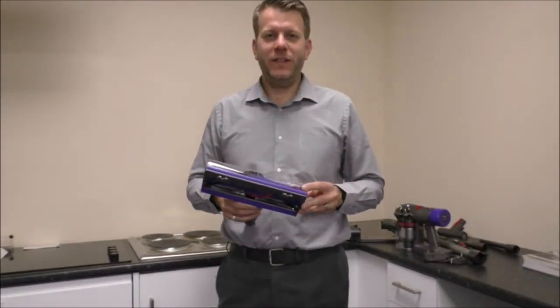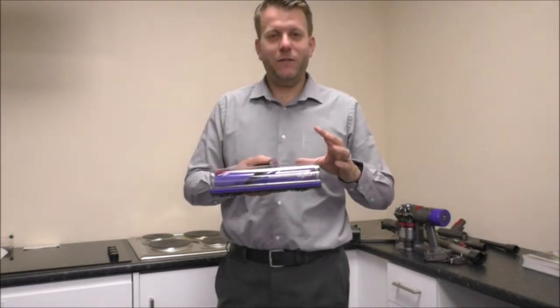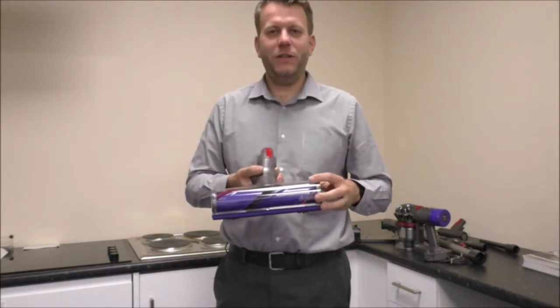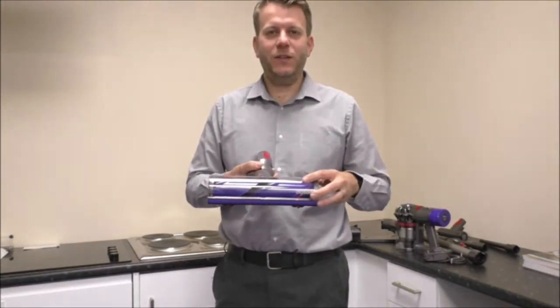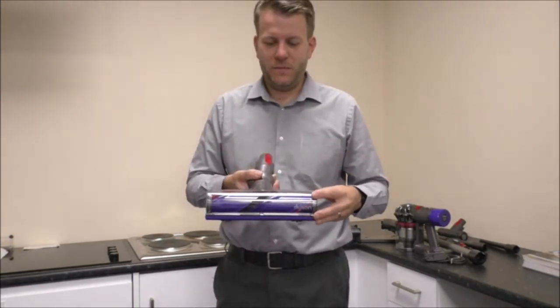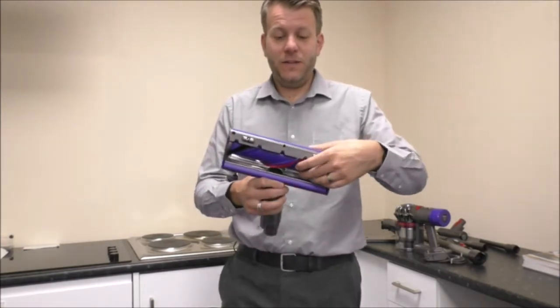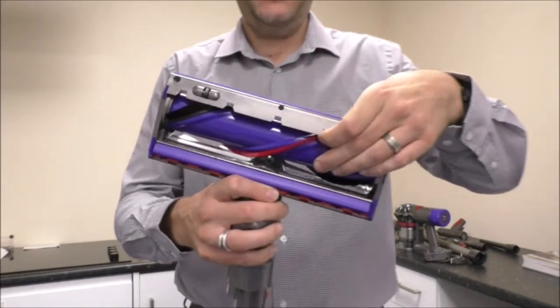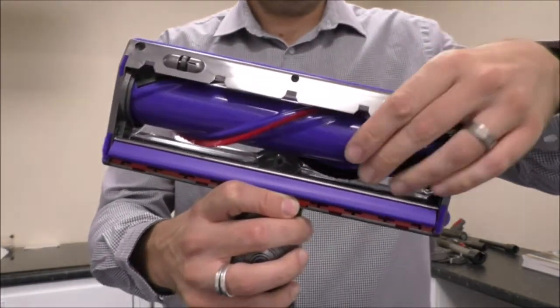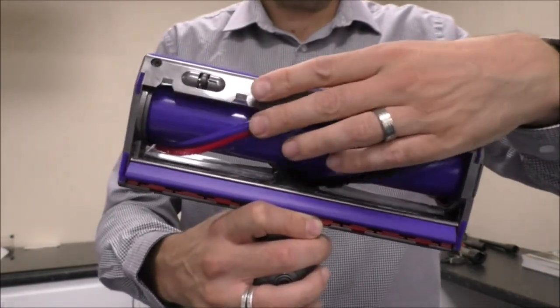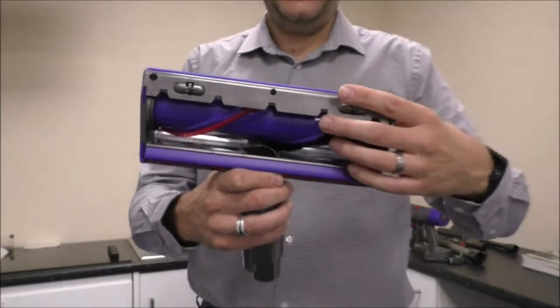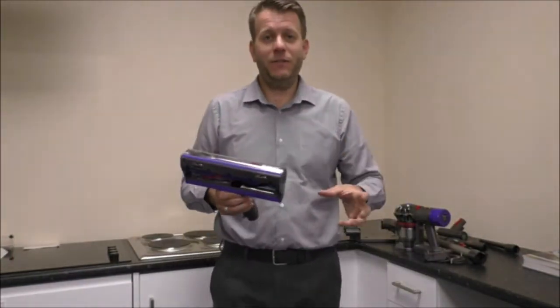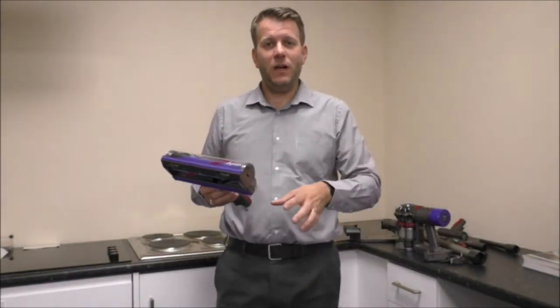So on to the tools and accessories now. This is the main floor drive head. It's called the direct drive cleaner head that it comes with. This is becoming fairly standard across the range of Dyson vacuums and the main advantage of this is, if we have a look underneath, it has got fairly stiff bristles. So the red ones are fairly stiff and the black ones are a bit softer and this is ideal really for any surface whether it's hard floors, carpets, tiles.